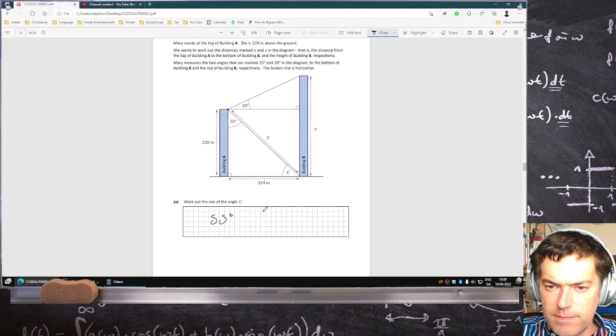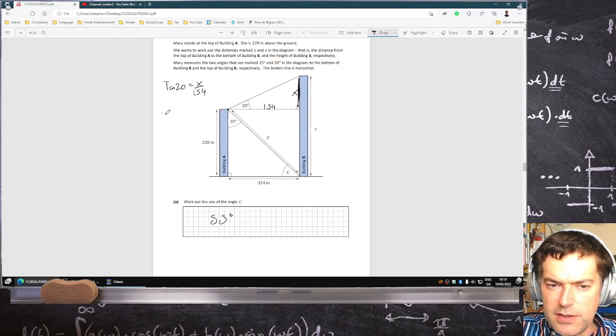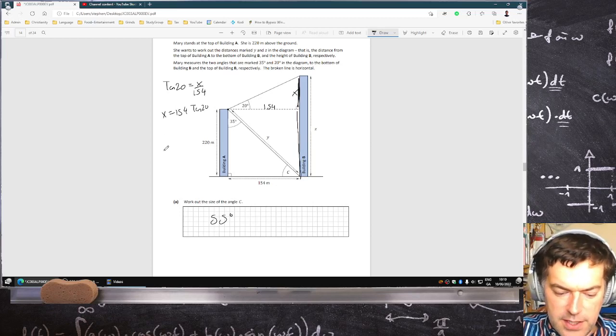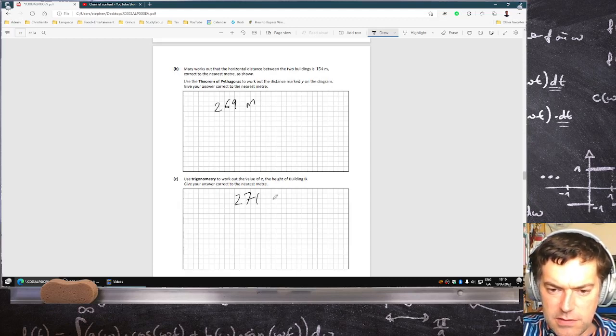Use trig, find Z. Well, we know that that's 154, so I could get that height here by using tan. I could say tan 20 equals, let's just call that x, x over 154, so x is 154 tan 20, and then I just have to add it on to 220. 154 tan 20, oh no, I'm in the wrong calculator mode. 154 tan 20 plus 220, that's 276 meters.